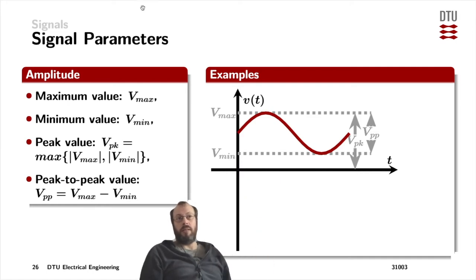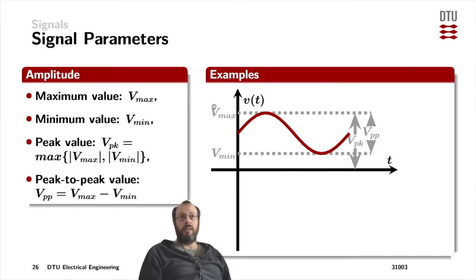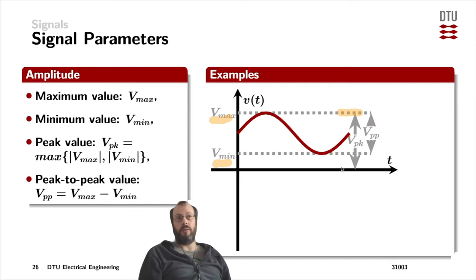Now let's have a look at another signal. This signal is a sine wave with some DC offset, like the one we've looked at when we spoke about what's coming out of the headphone jack of a telephone, a computer, or a tablet. The maximum value is up here — that's the maximum of the signal. The minimum is the lowest of the signal. The peak value is the absolute of the maximum, because that's the one furthest away from the time axis, and the peak-to-peak value is the difference of the maximum to the minimum.